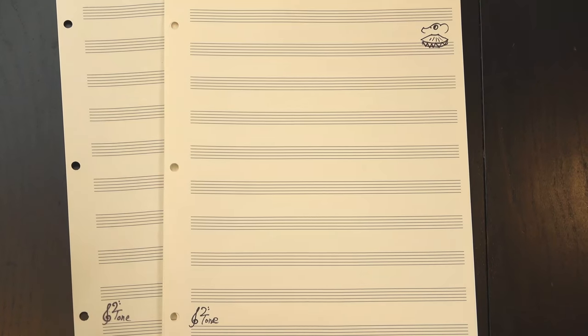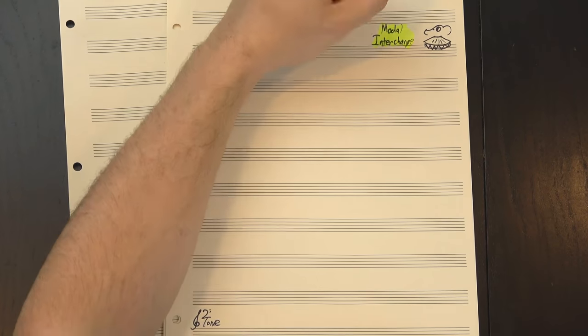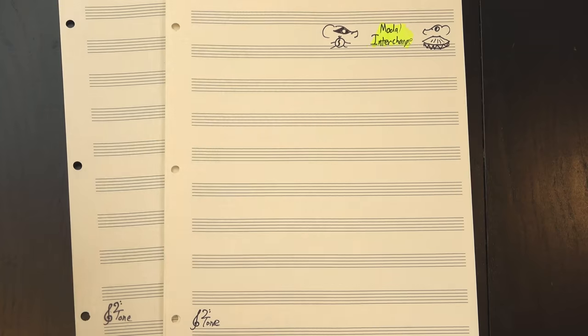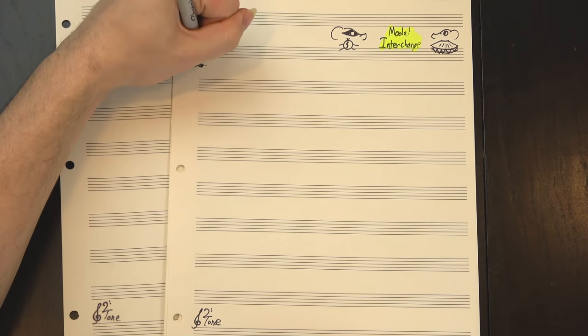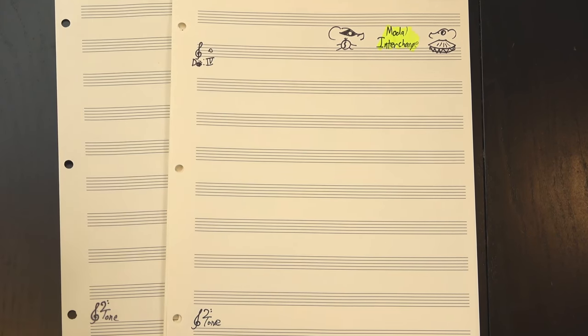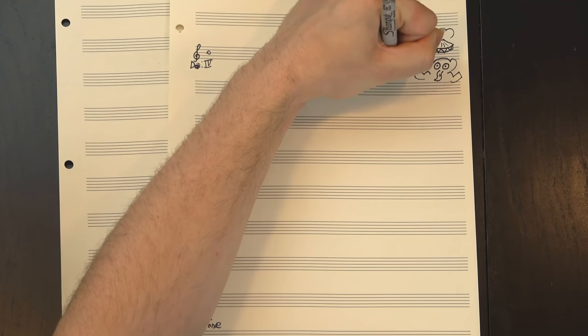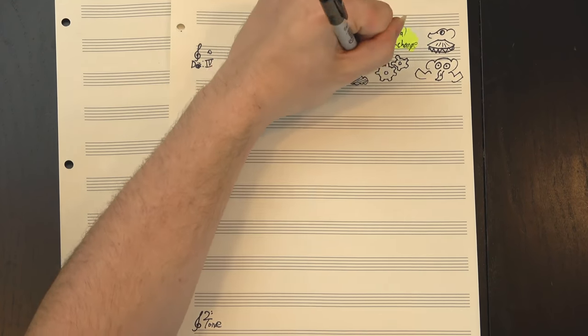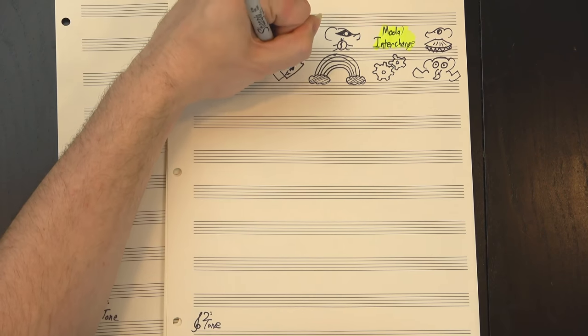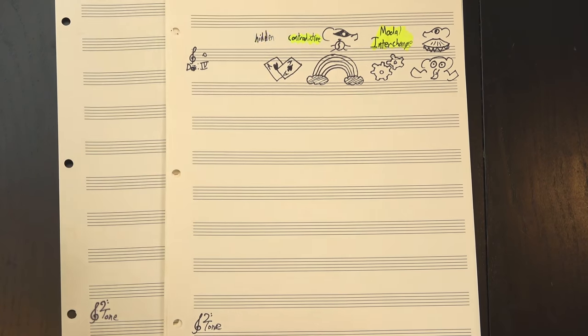The more classical way to look at it, though, is as what's called modal interchange, which is where you borrow a chord from a neighboring scale. We're in D minor, and this G chord exists in D major, which is close enough. Modal interchange adds a bit more character and complexity, giving you access to more emotional colors, and we can divide it further into two categories, contradictive and hidden.